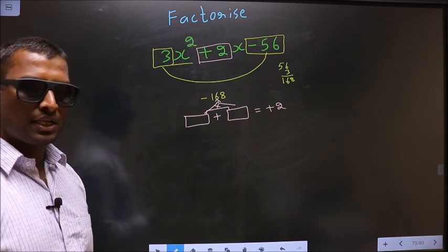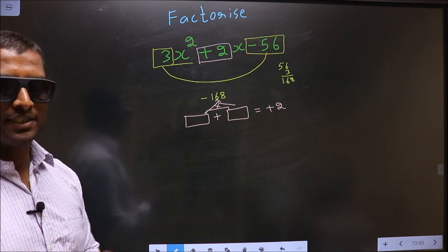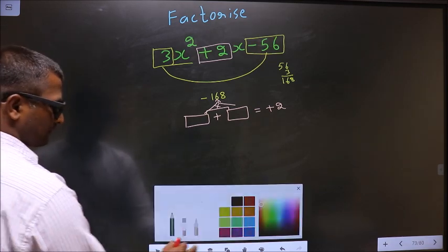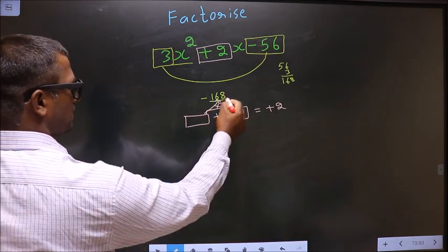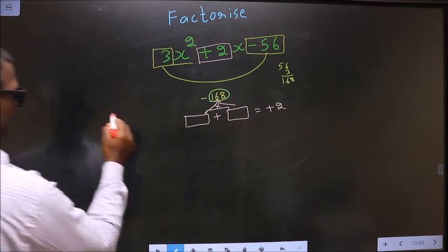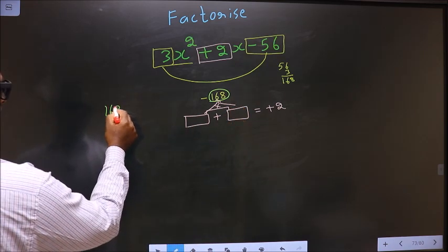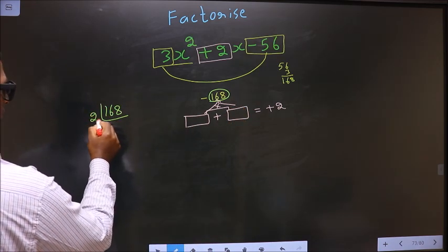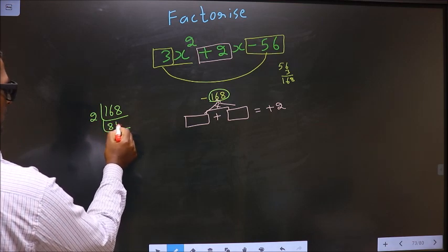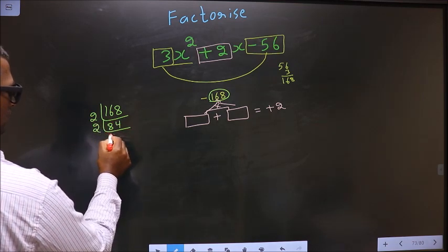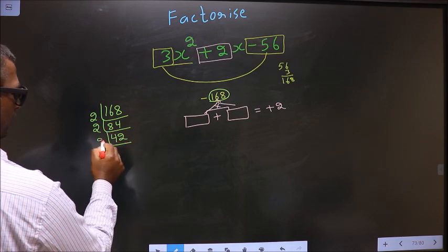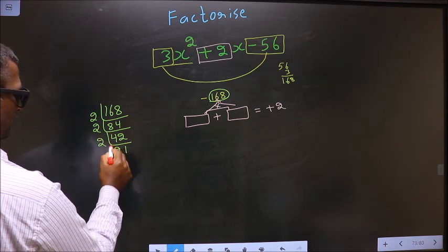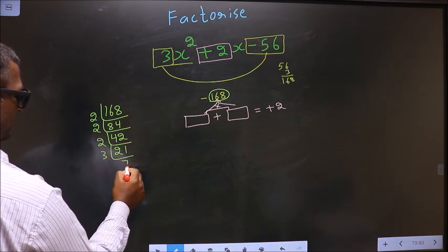To find those two numbers, we factor 168. Starting with 2, then 2 again, then 2 again, then 3, then 7. So 168 = 2 × 2 × 2 × 3 × 7.